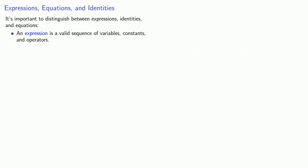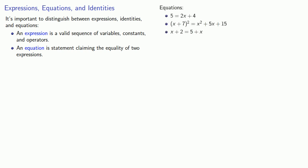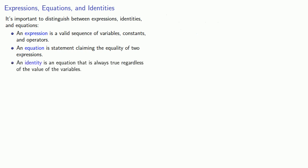An equation is a statement claiming the equality of two expressions. And an identity is an equation that is always true, regardless of the value of the variables.